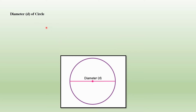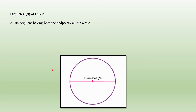Next, let us see what is the diameter of a circle. A line segment having both end points on the circle is called the diameter of the circle. In this figure, both of the end points are touching the circle, hence it is called the diameter of the circle.